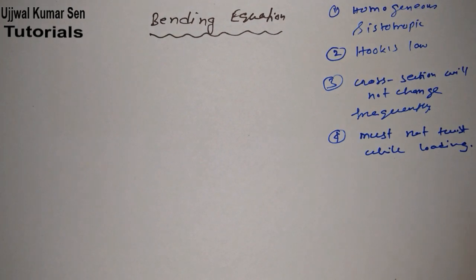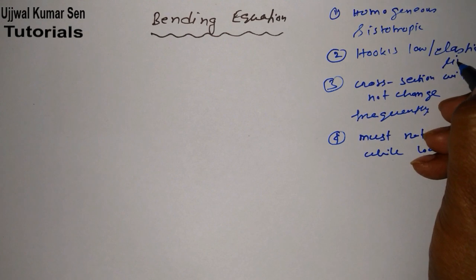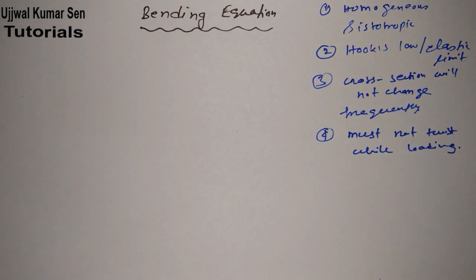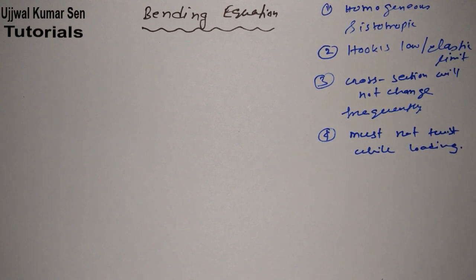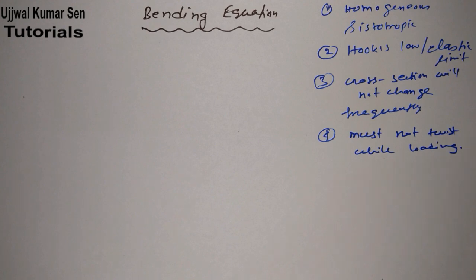So those are a few assumptions — there are others we can assume as well. One more: the beam must be within the elastic limit, which is essentially related to Hooke's law. So the major assumptions are: the beam must follow Hooke's law, be homogeneous and isotropic, its cross-section will not change frequently, and it must not twist while loading.